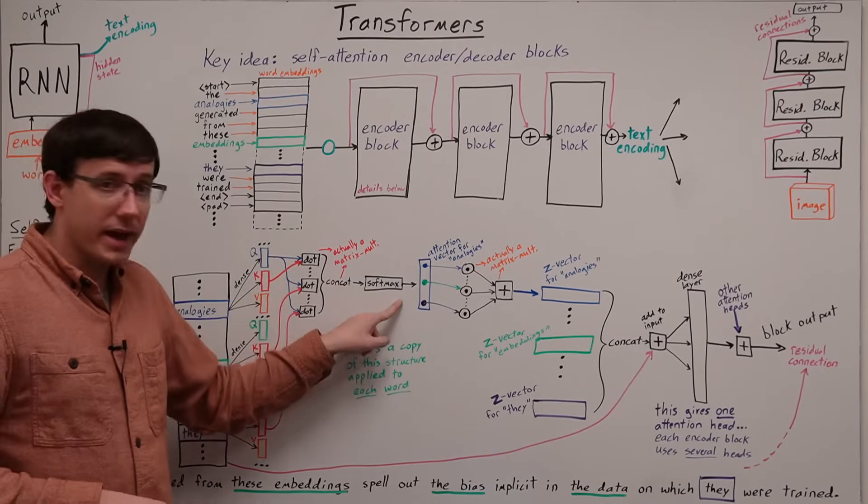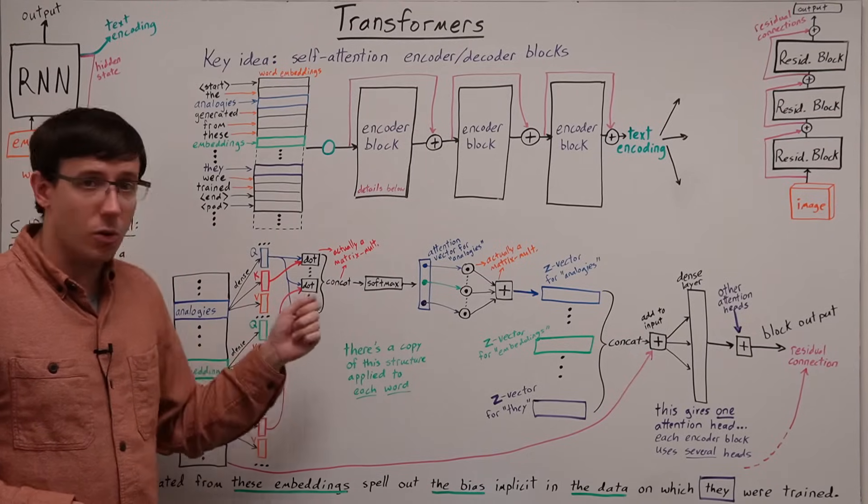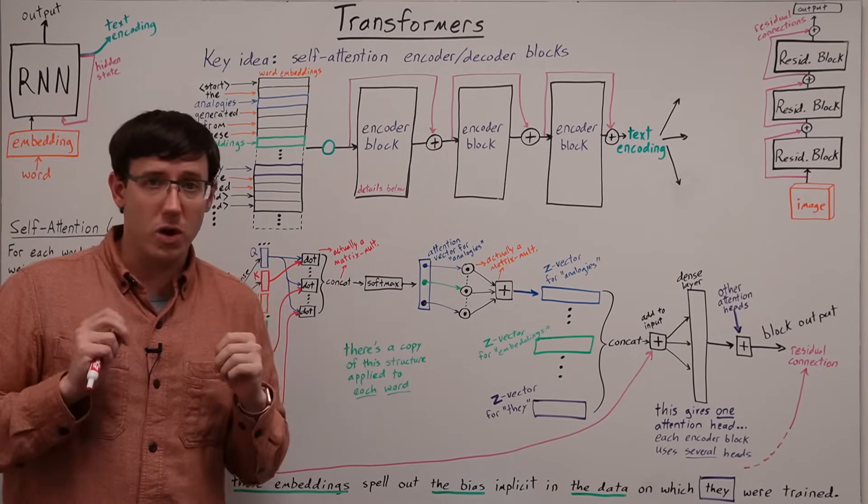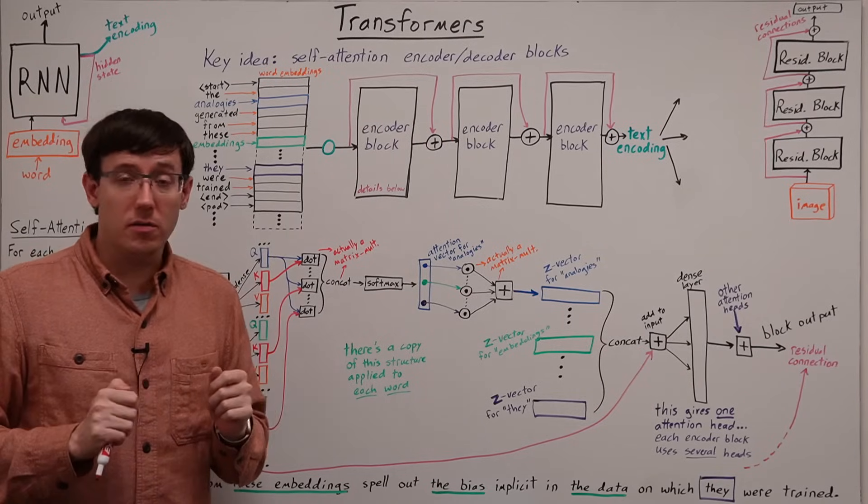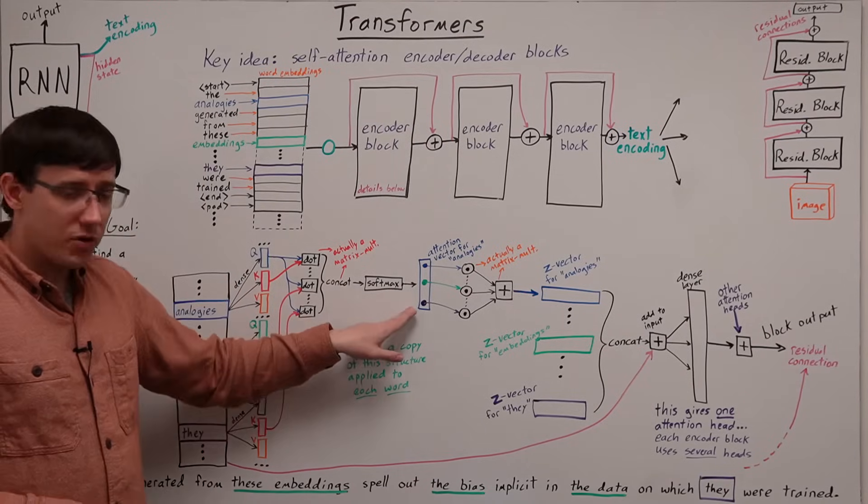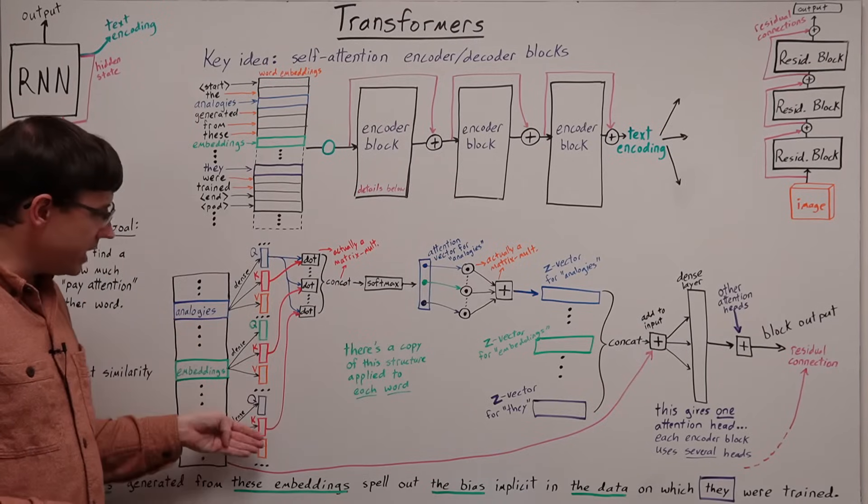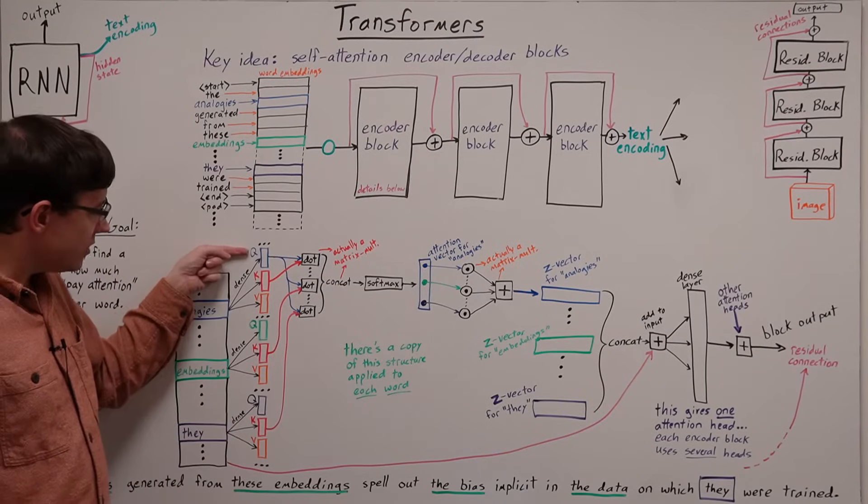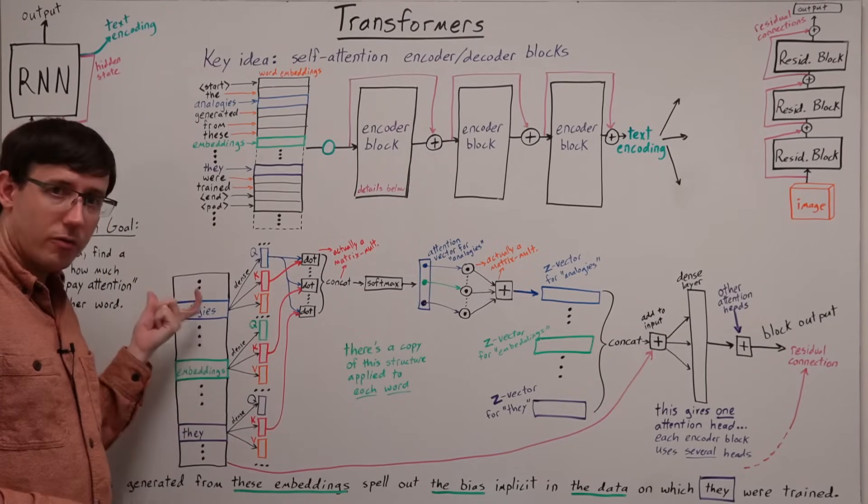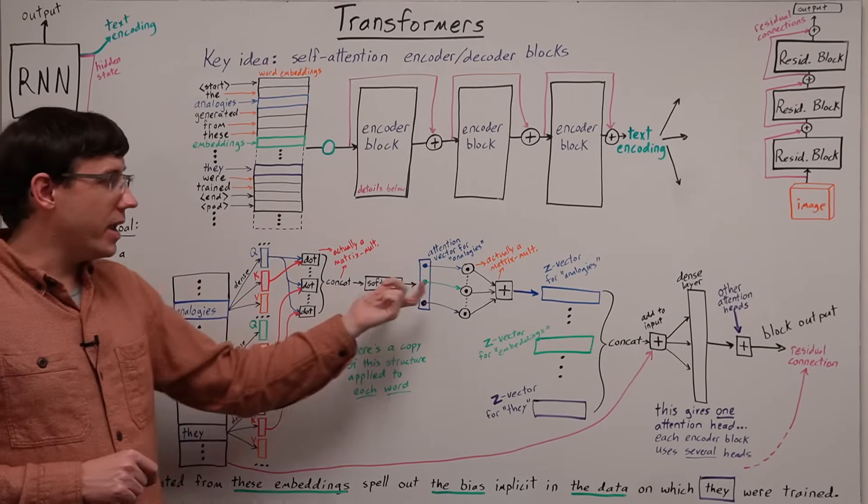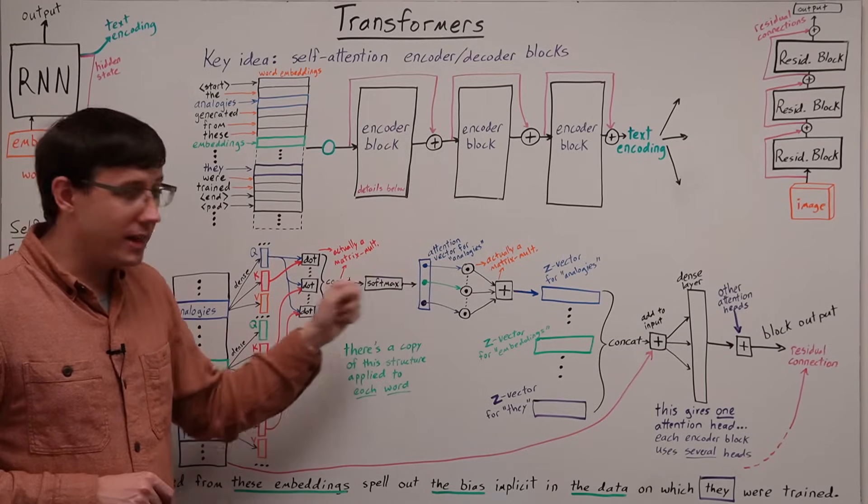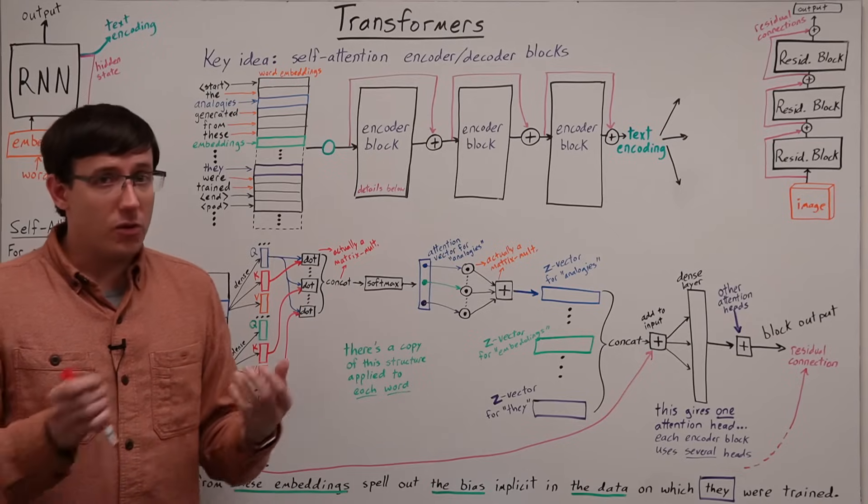Then we can apply a softmax to convert those similarity scores to values between 0 and 1 that emphasize the most similar of the vectors. So this vector represents for all of the keys which are most similar to the query for the word analogies, and we can use that to say what should we pay attention to when evaluating the word analogies.